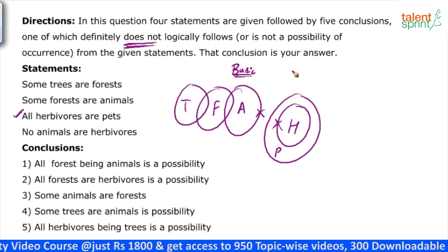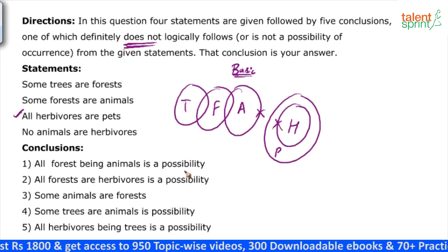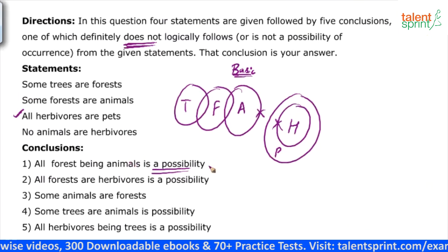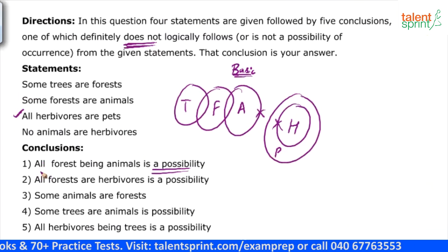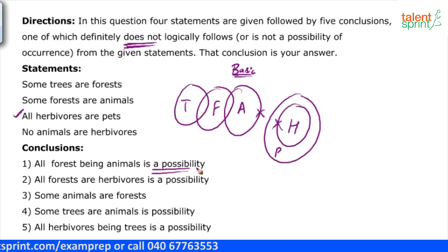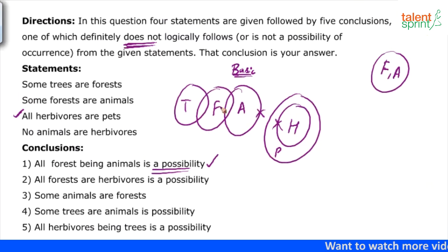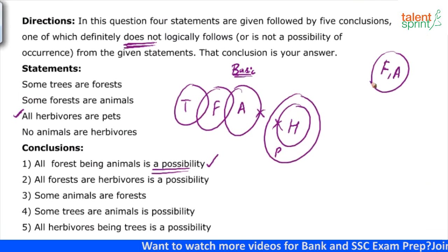Now let's look at the conclusions and find out which are correct and which is wrong. Conclusion 1: all forests being animals is a possibility. He is talking about a possibility here. If he said simply all forests are animals, we would say it's wrong because in the basic diagram not all forests are animals. But since he's talking about possibility, we just need one diagram to prove it. Some forests are animals can also be drawn as all forests are animals — where forests and animals are in the same circle. So all forests being animals is definitely possible.